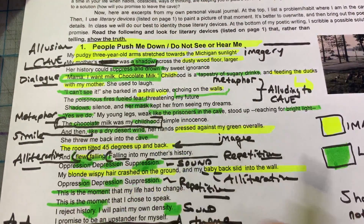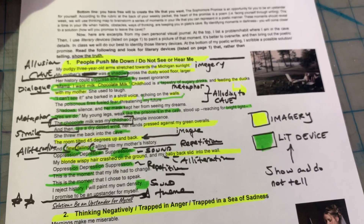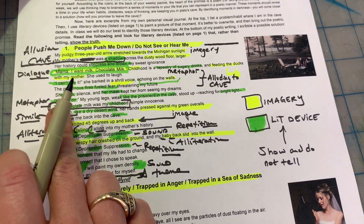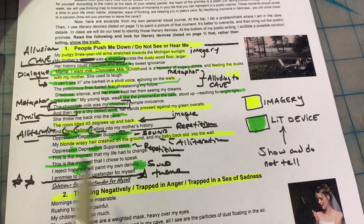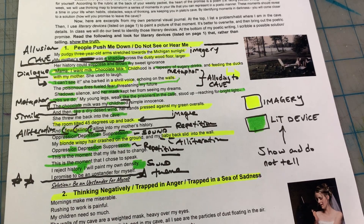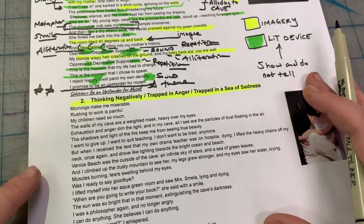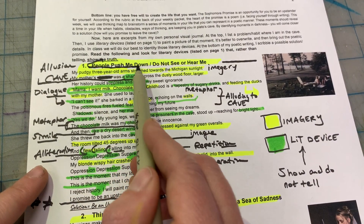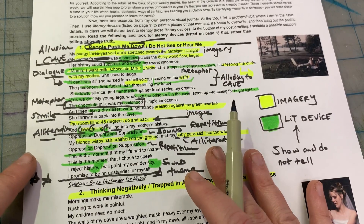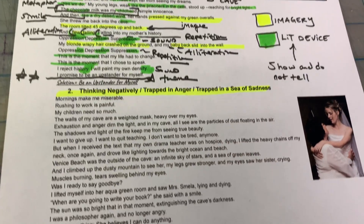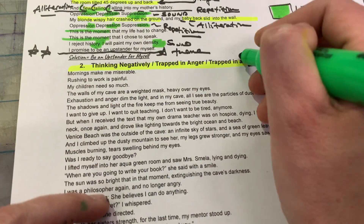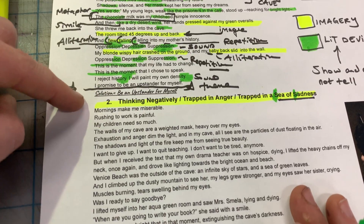Okay, turn to your partner: how does the poet use literary devices — like allusion, imagery, and metaphor with the chocolate milk and dialogue? Turn to your partner: what are some literary devices you might use in your sophomore promise? Now, let's do one more. This problem — people oppressing us, pushing us down, or not listening. Here's another problem: thinking negatively or being trapped in anger. 'Sea of sadness' — that's alliteration. The promise is the solution; that's the theme. We identify a problem to write about to identify your change.